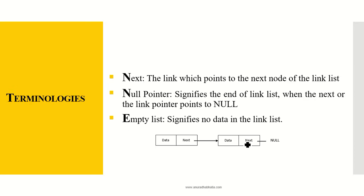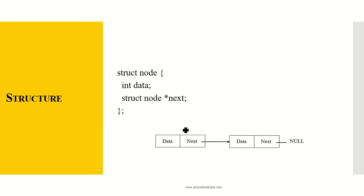The key terminologies used are: 'next' — the link which points to the next node of the linked list; 'null pointer' — signifies the end of the linked list; when the next pointer points to null, it signifies the list ends there; and 'empty list' — signifies no data in the linked list. The structure of a node is declared as: integer data, struct node pointer next. It has a data field and a next field which is of pointer type pointing to the next node, and null is represented as null.